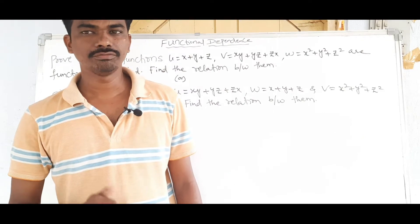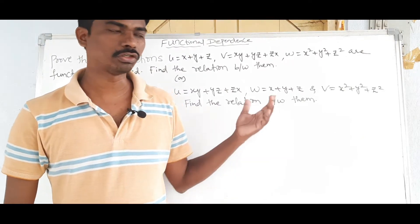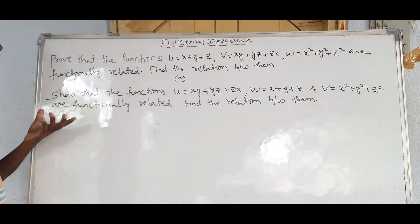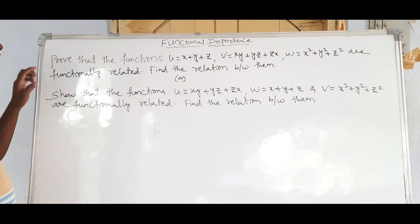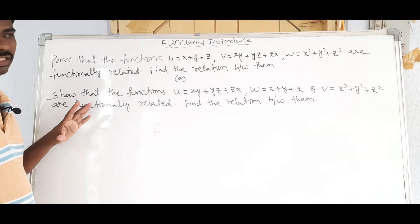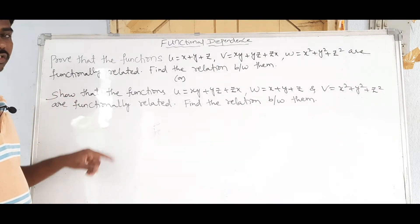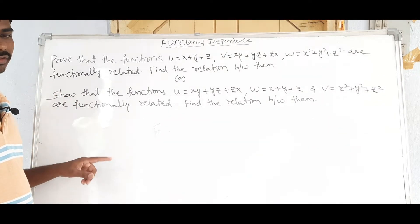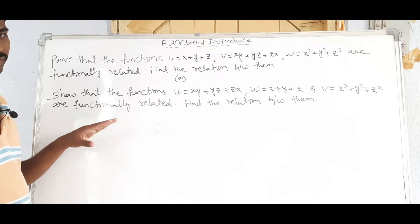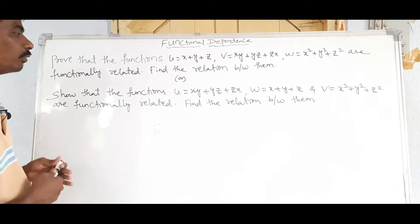Hi viewers. Welcome to Rajashtrakalu. Today our topic is the Functionally Dependence Problem. We have two types of Jacobian: one is Functionally Independent and one is Functionally Dependent. Let's focus on Functionally Dependence.